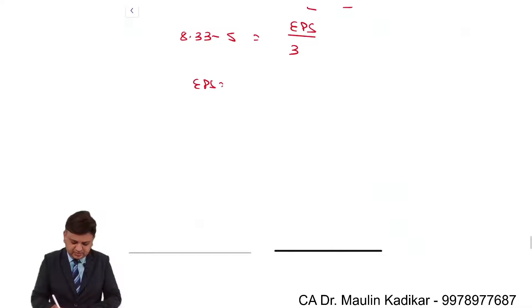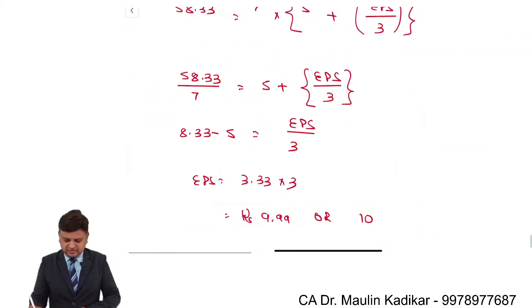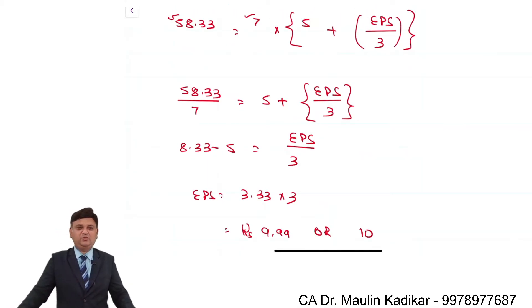So earning portion is 3.33 into 3, that comes to 9.99, or we can say that the earning portion is rupees 10. This is the way we can do answer.